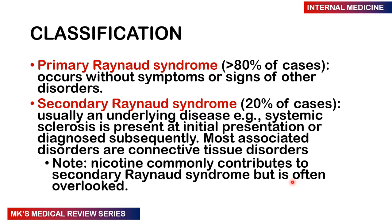Reynolds syndrome is classified into primary Reynolds syndrome, which accounts for more than 80% of cases and occurs without symptoms or signs of any other disease. Then you have secondary Reynolds syndrome, accounting for 20% of cases, which is secondary to an underlying disease — for example, systemic sclerosis. Most associated disorders are connective tissue disorders. Nicotine commonly contributes to secondary Reynolds syndrome but is often quite overlooked.